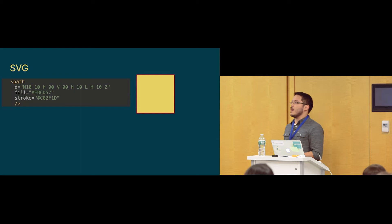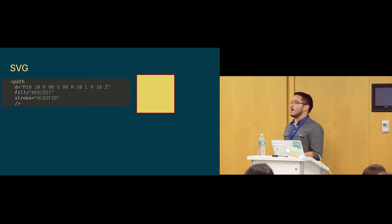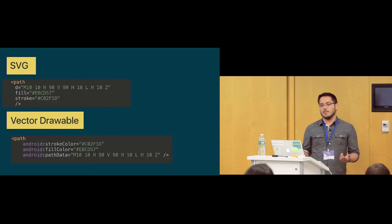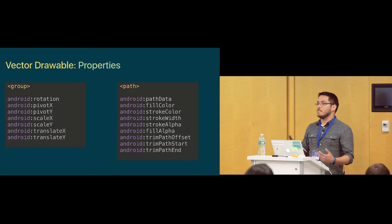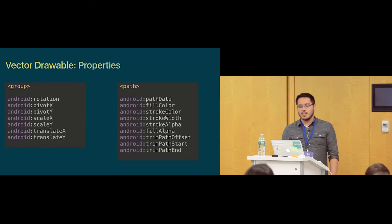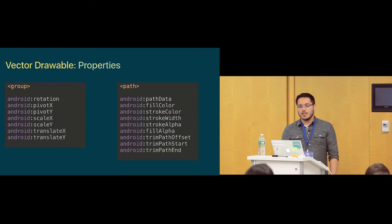If we compare an SVG to a vector drawable, we get something pretty similar. We have the same tag path, and we have stroke, fill color, path data, and some other stuff. The important properties for today's talk on animated vector drawables are trim path offset, trim path start, and trim path end. I'm going to focus on those four properties.